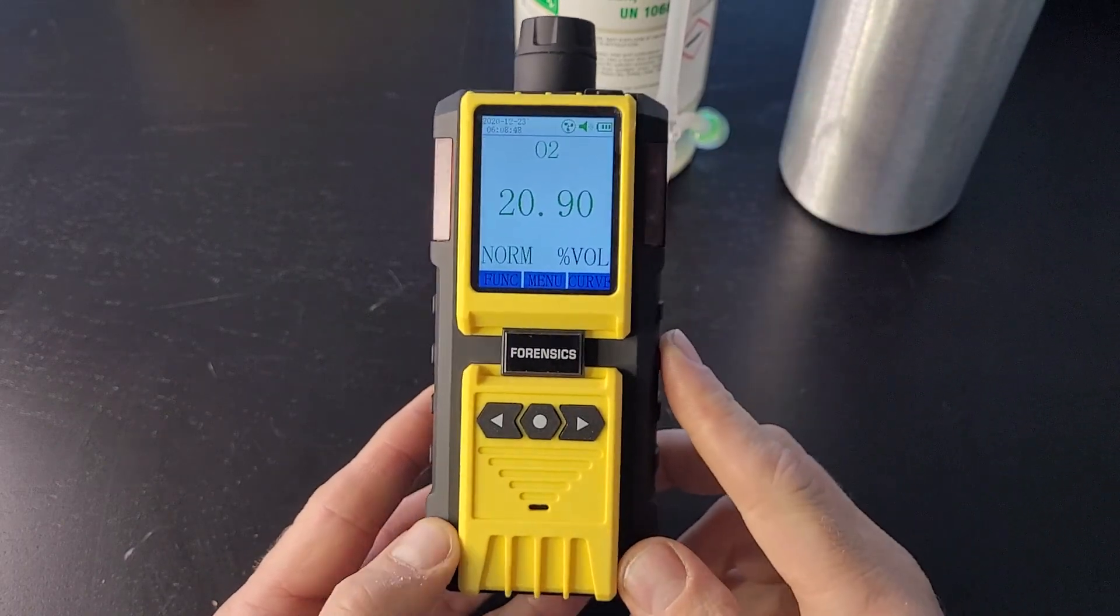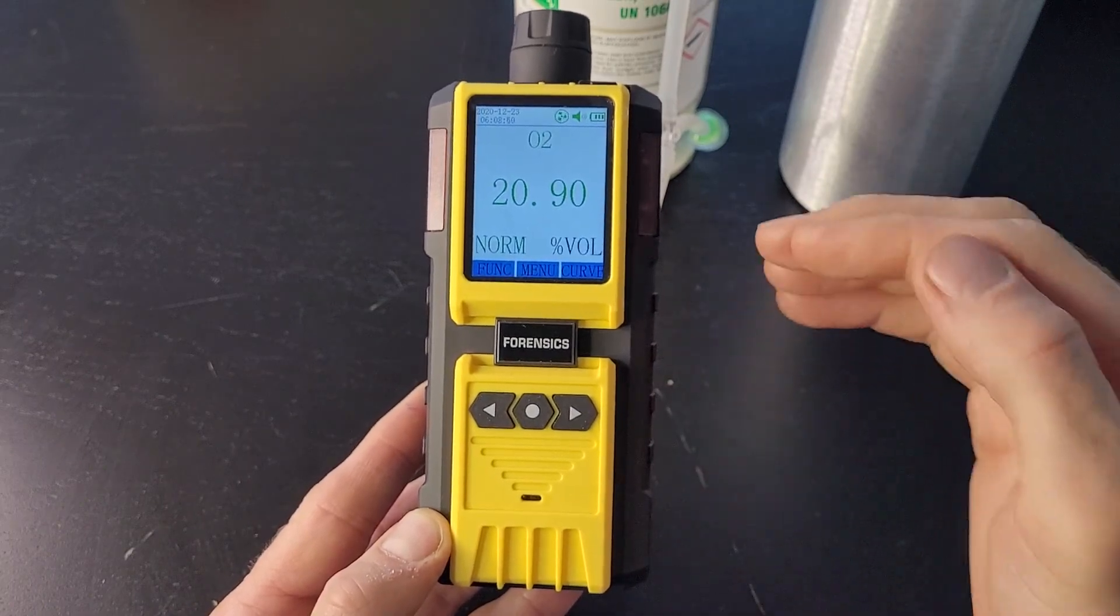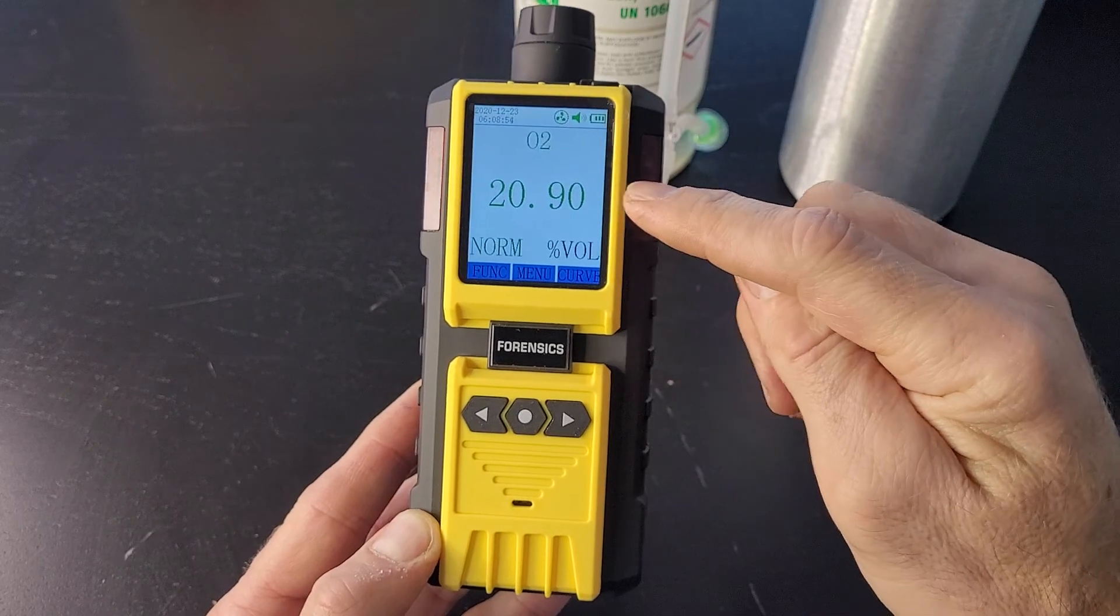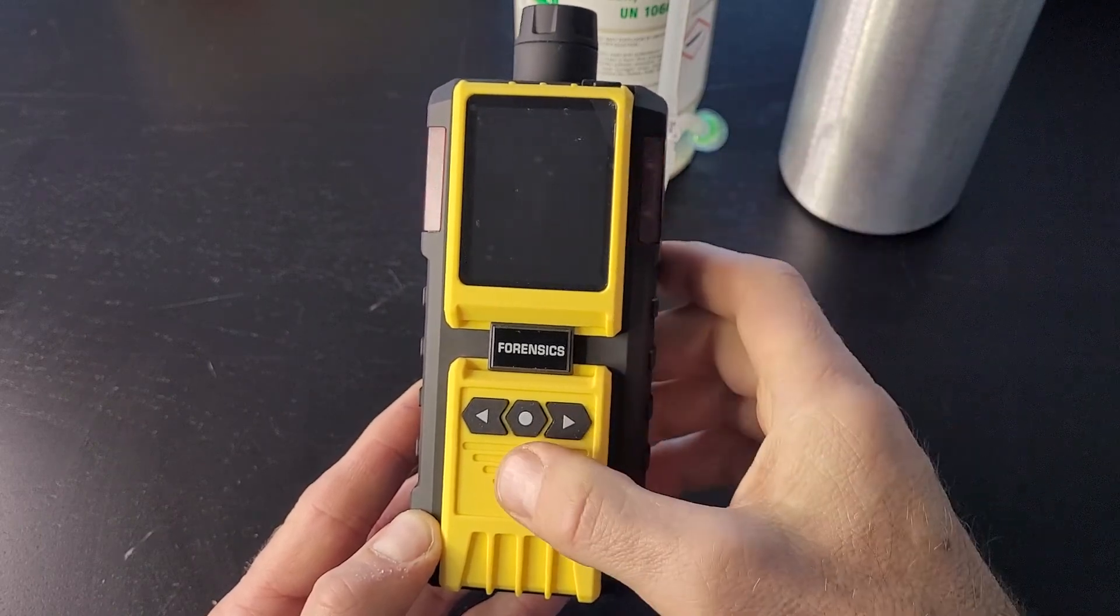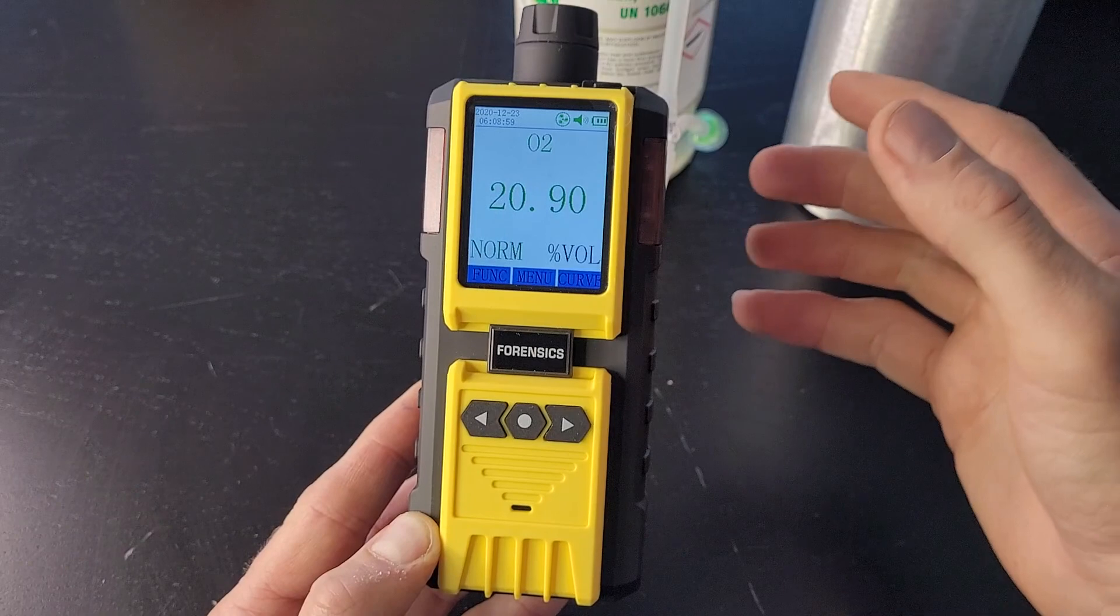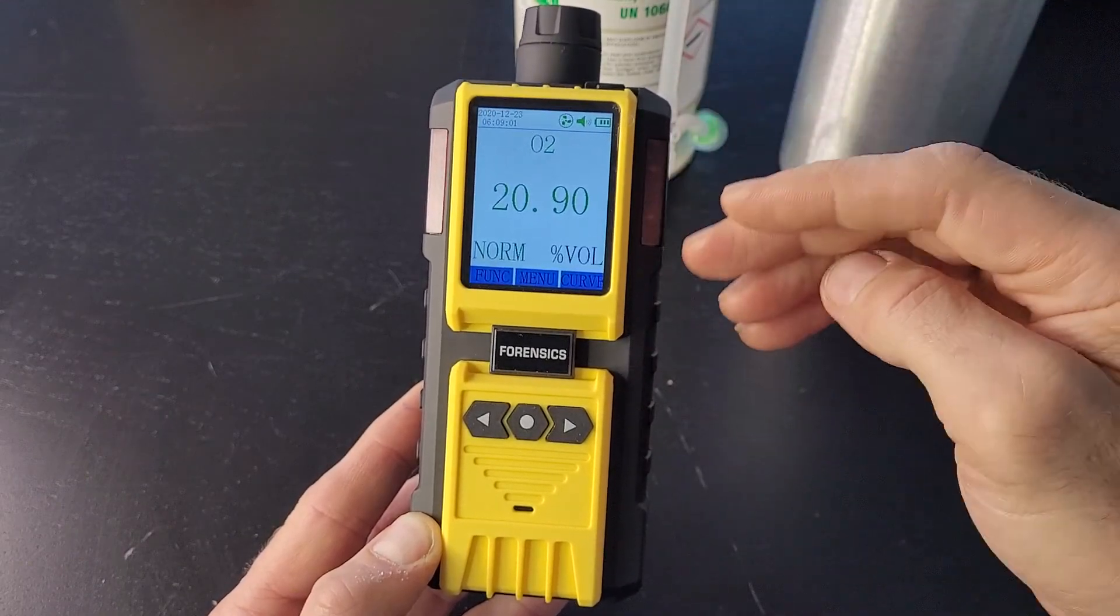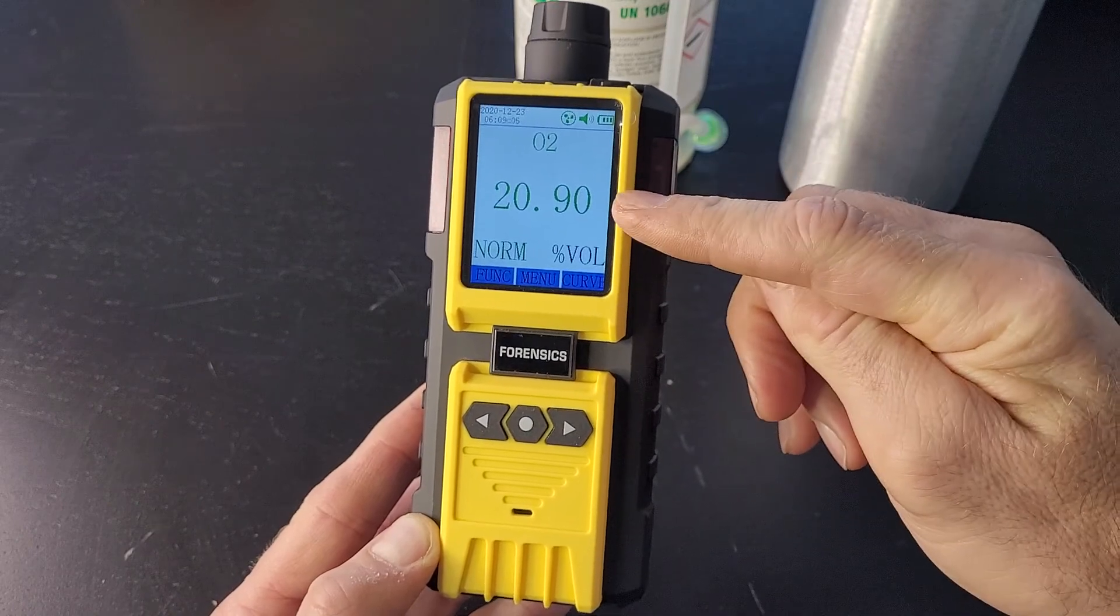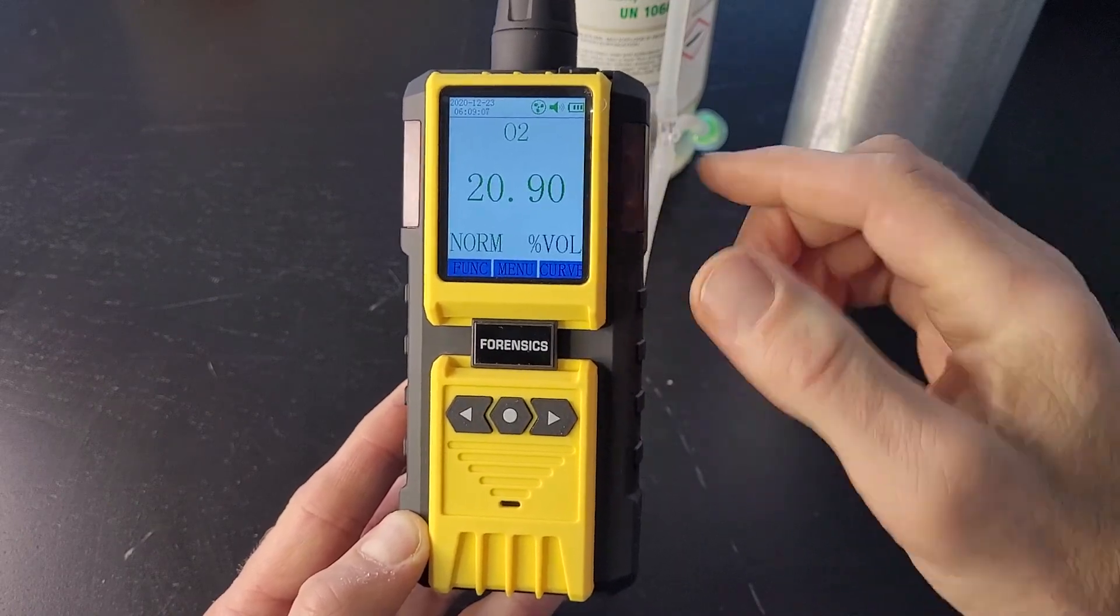There's two parts to this video. One is a quick calibration to 20.9%. Sometimes the 20.9 wavers, it could go down. It could be 20.6, 20.3, or it could be above, 21.1. You want to always get it at a starting point of 20.9. How do we do that?